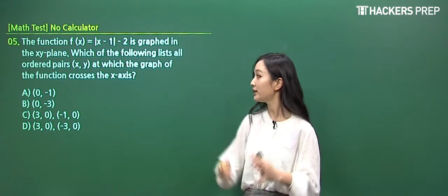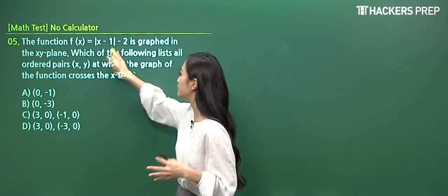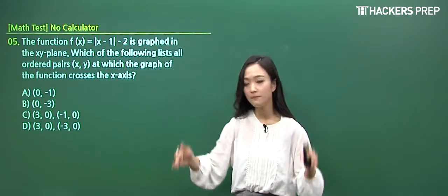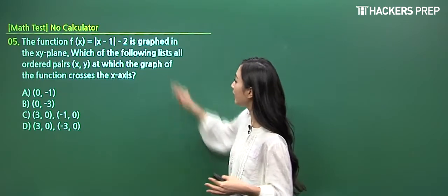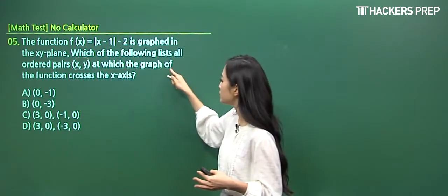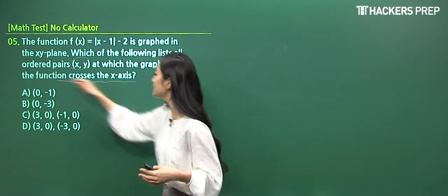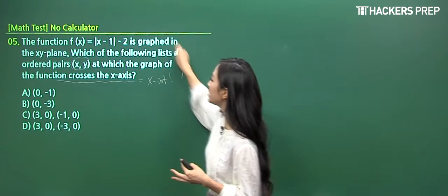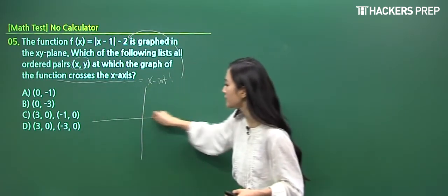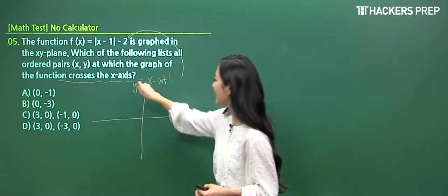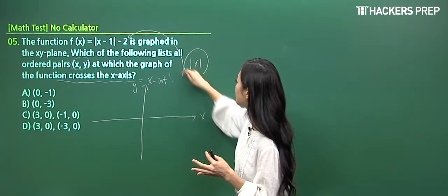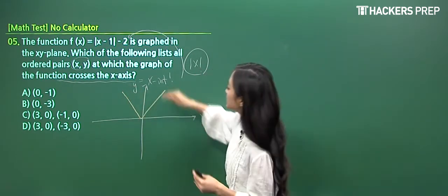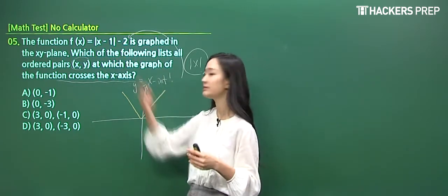So let's do number five real quick. What are they telling us? We are involving an absolute value function. So f of x is given by the absolute value of x minus 1, everything subtracted by 2. And they're telling us that it is graphed in the xy plane, the two-dimensional plane, where we have the x-axis and the y-axis. And what is the question? What is the point at which the graph actually crosses the x-axis? Can you guys tell me a simple term that refers to this long definition or the long explanation? It's simply asking for the x-intercept of the original equation. So first of all, let's approach this question in a graphical representation.